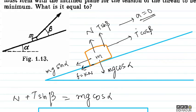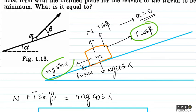Setting acceleration to 0 here means we can consider acceleration as 0.0000001 — just slightly greater than 0. That particular acceleration means net force is almost 0. We know the force up the incline is very slightly greater than the force down the incline. So the force up the incline is T cos beta, and down the incline is Mg sin alpha and K times N.